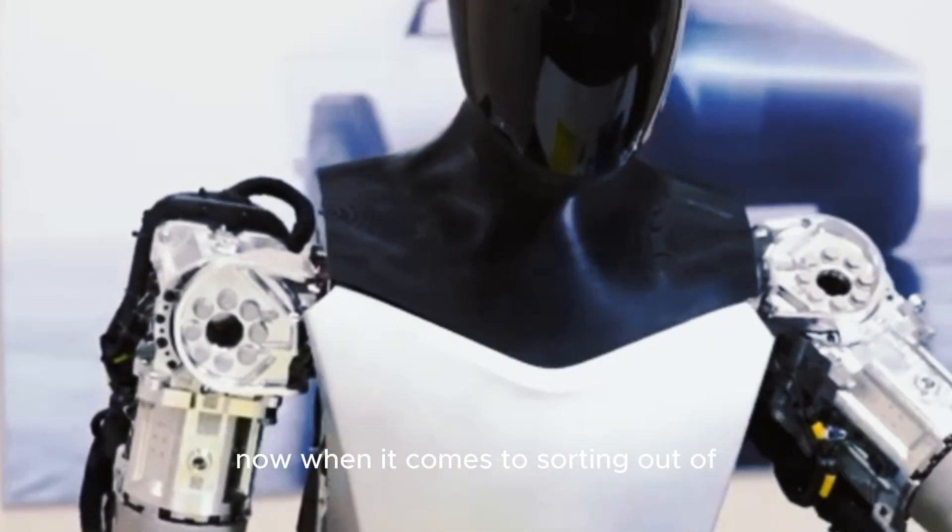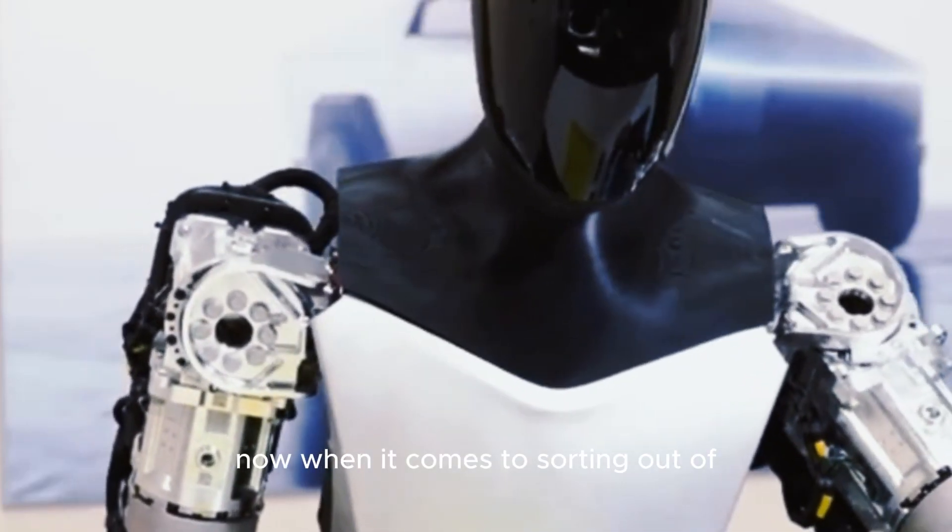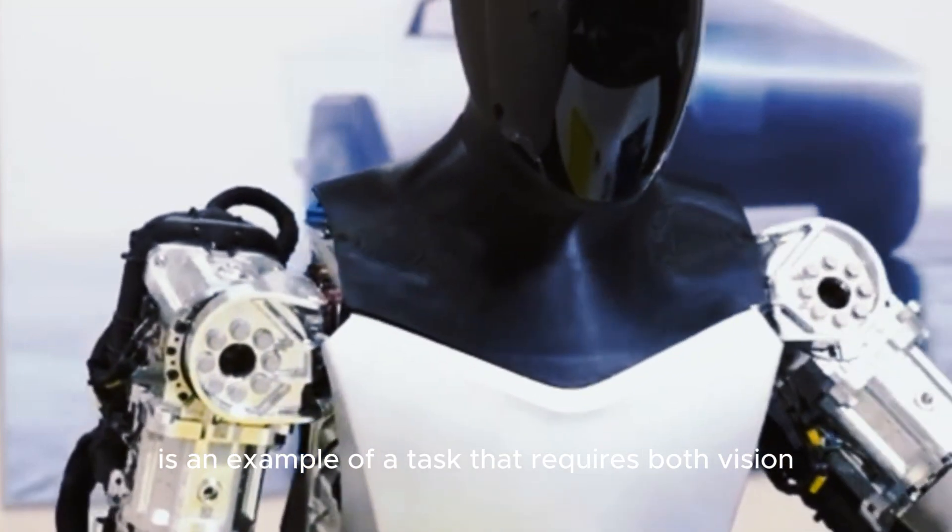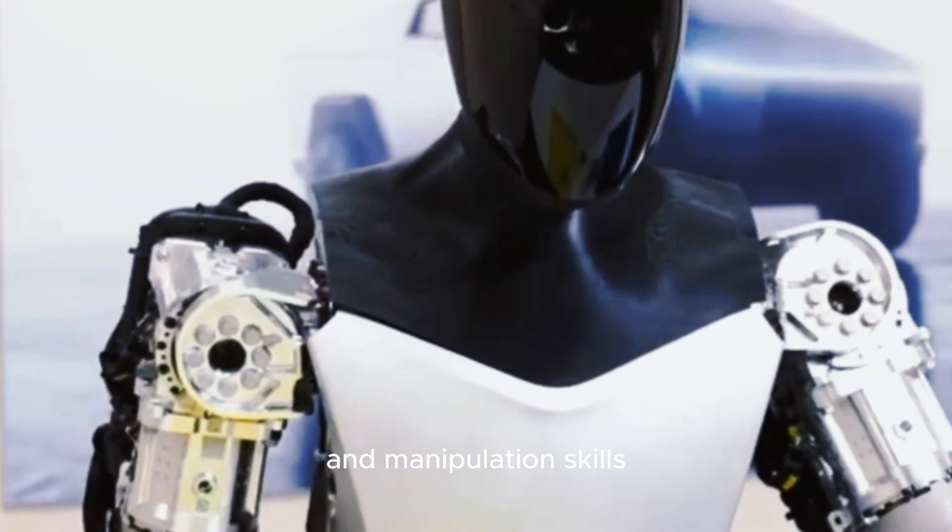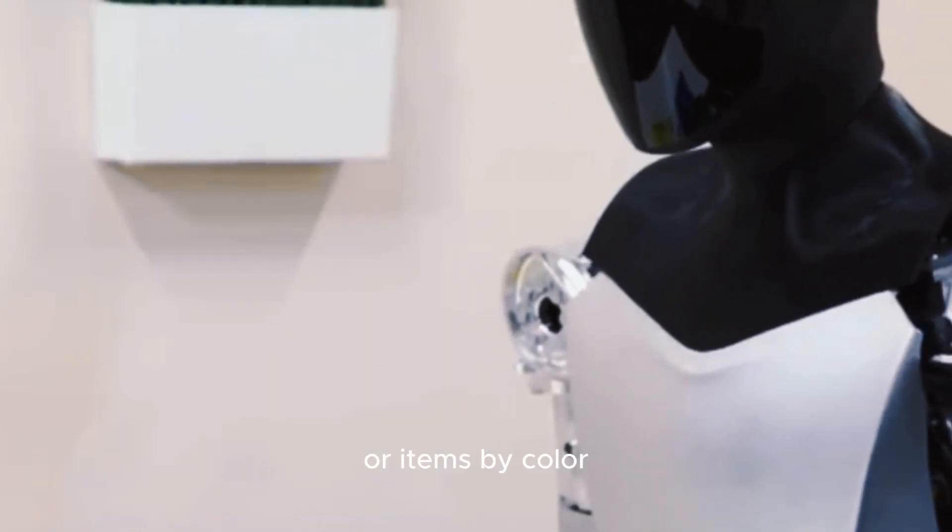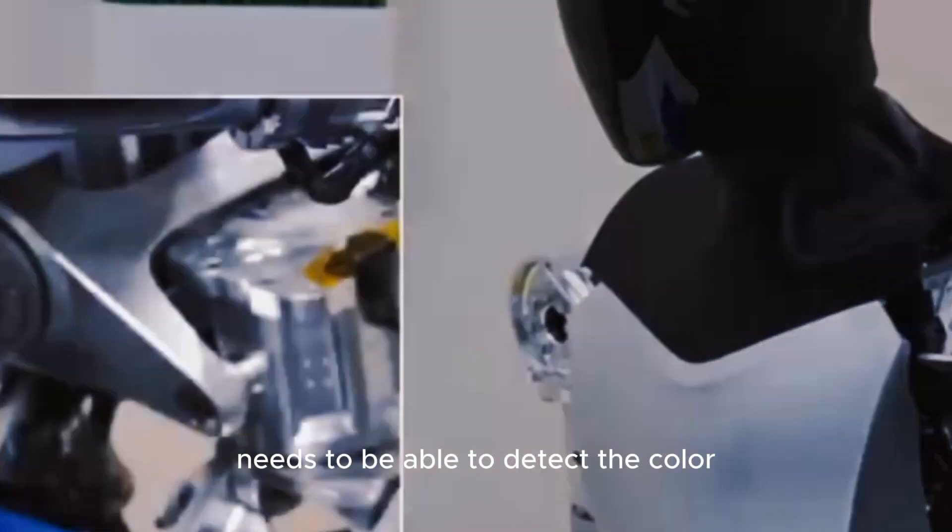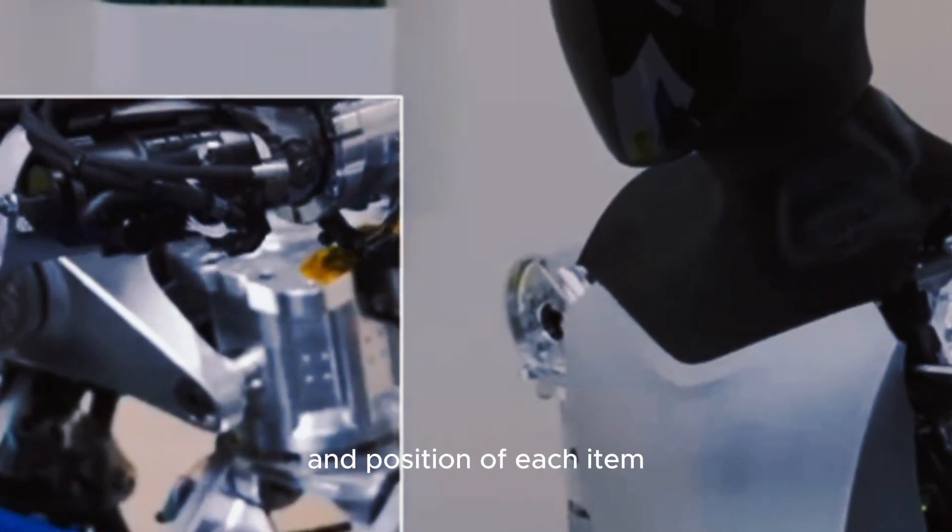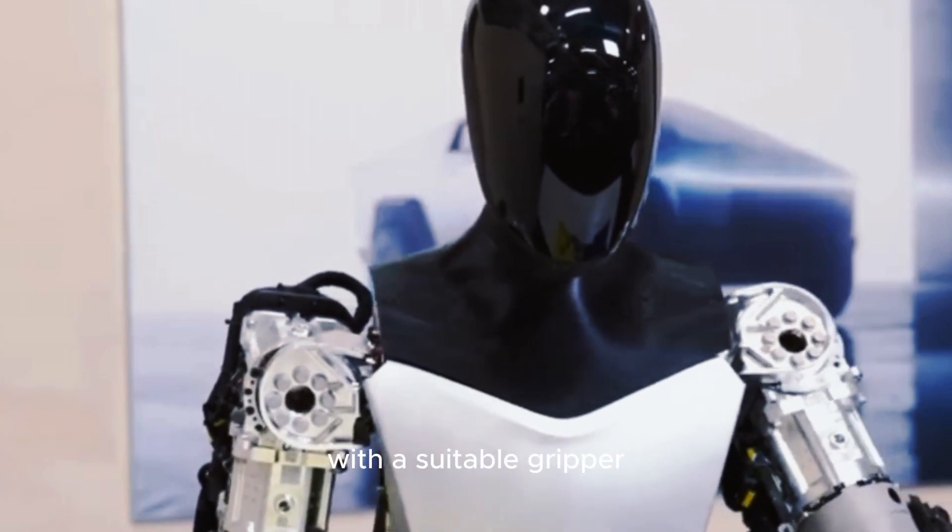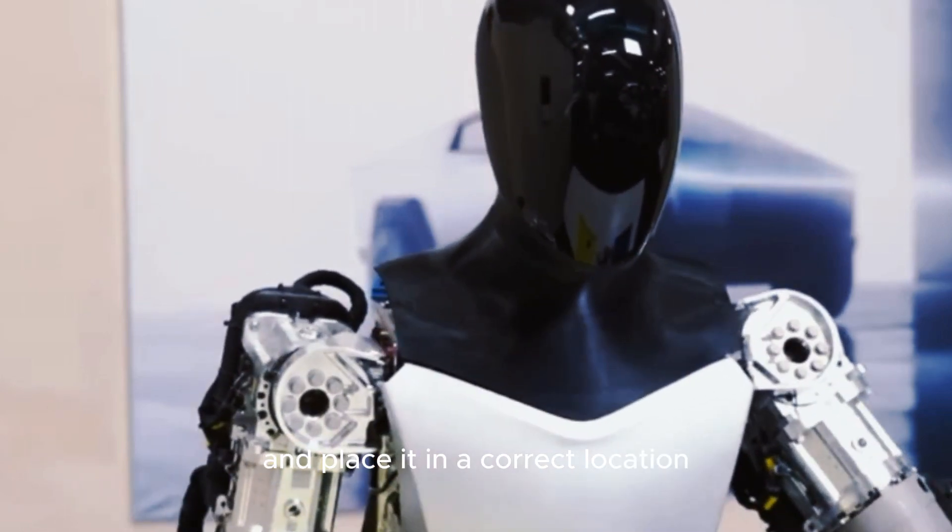Now when it comes to sorting out items based on color, it's an example of a task that requires both vision and manipulation skills. A robot that can sort balls or items by color needs to be able to detect the color and position of each item, pick it up with a suitable gripper, and place it in a correct location according to a predefined order or pattern.